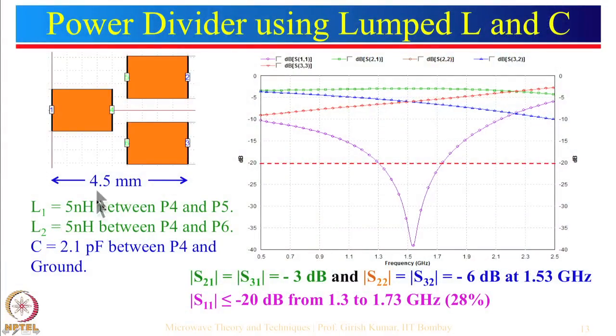One capacitance from port 2 to ground and one capacitance from port 3 to ground are in parallel — they can be replaced by a single capacitor to ground. Using these values, the reflection coefficient plot shows the bandwidth is from 1.3 to 1.73 GHz — about 28 percent bandwidth.